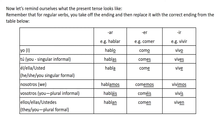So if we're going to say yo, I do something, remember that AR needs to come off and an O needs to go on. So hablo, I speak; como, I eat; and vivo, I live. And that works the same all the way down.